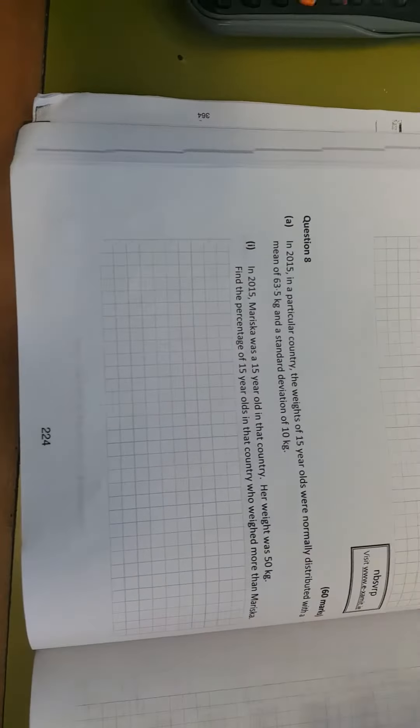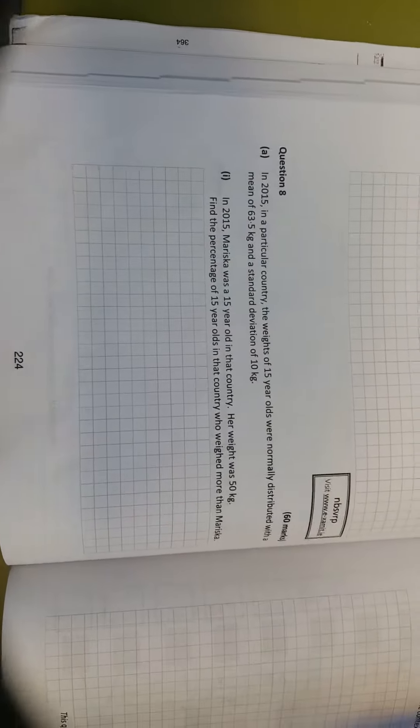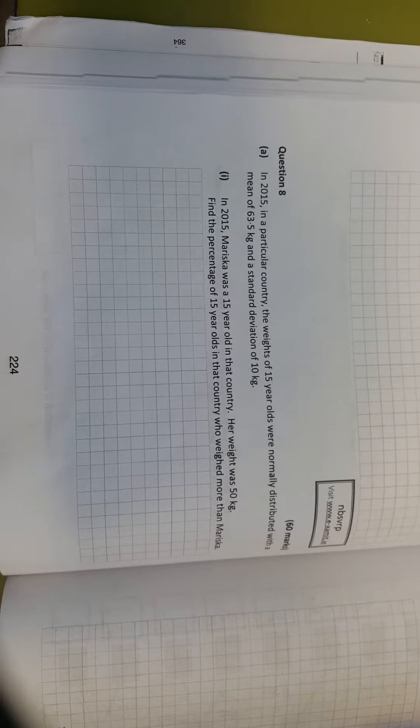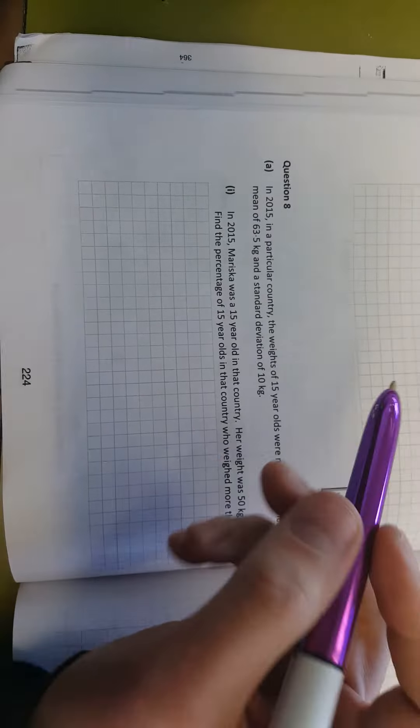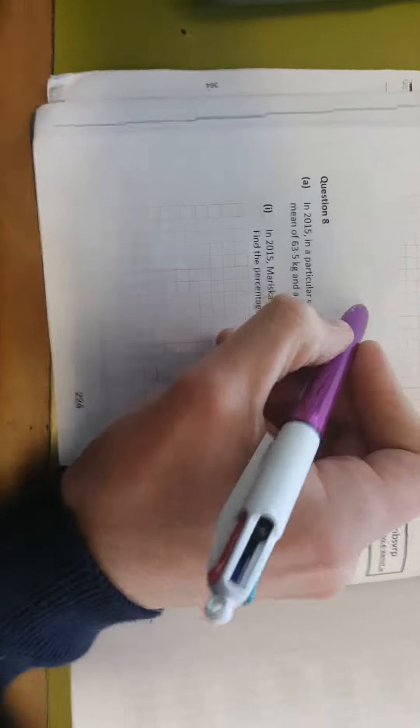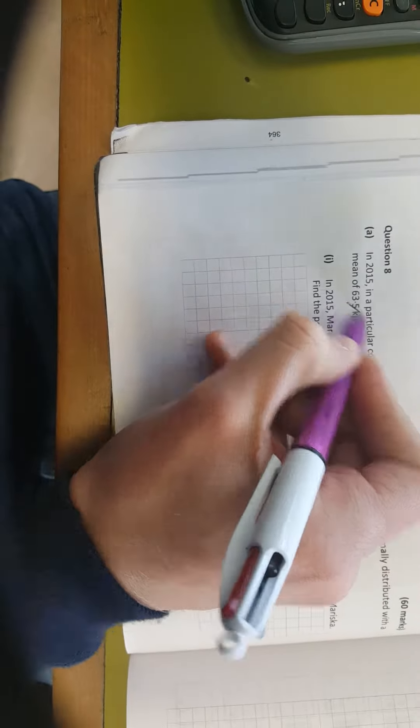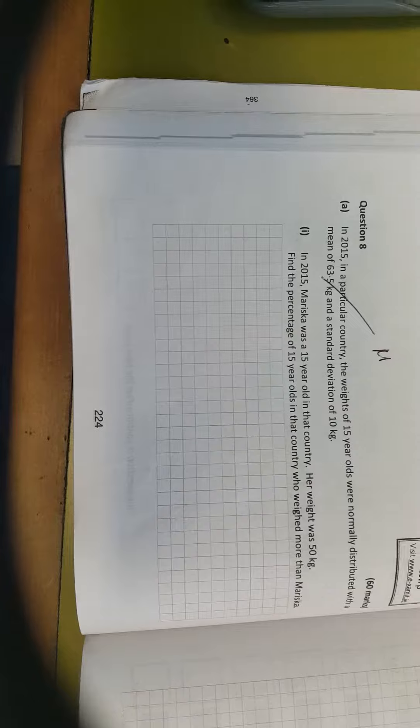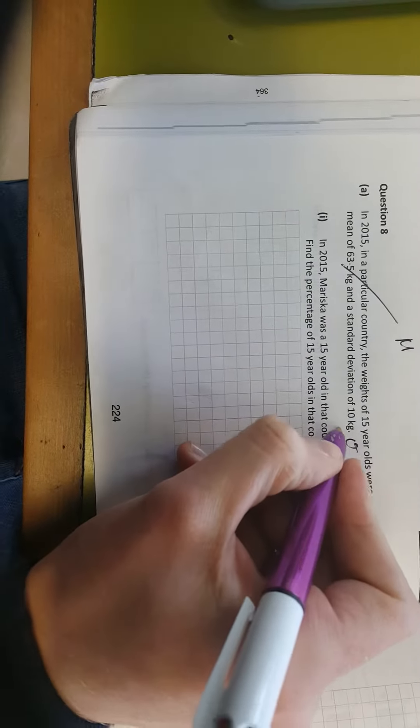So in 2017, the question was, in 2015, in a particular country, the weights of 15-year-olds were normally distributed with a mean of 63.5. So this 63.5 is your mean of your population, so it's μ, and a standard deviation of 10 kg.